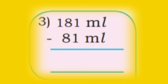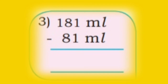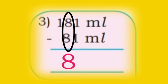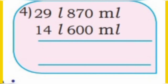Now subtract hundred place: 4 minus 3 is 1, so write in hundred place. Answer is 150 milliliter. Third one: 181 milliliter minus 81 milliliter. We subtract first unit place: 1 minus 1 is 0, write in unit place. Now subtract tenth place: 8 minus 8 is 0, write in tenth place. Now in hundred place, 1 remains, so write as it is.